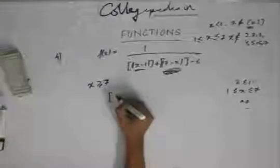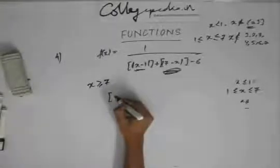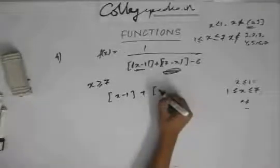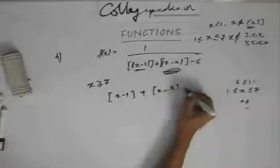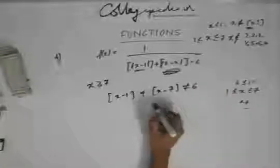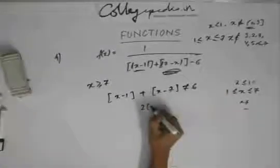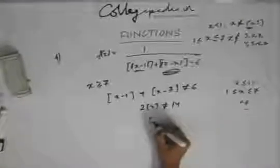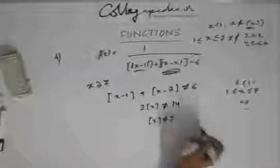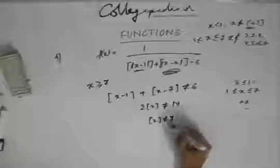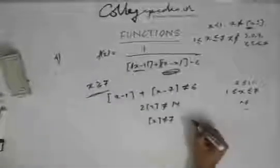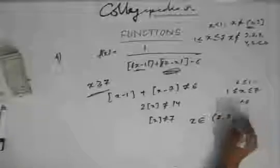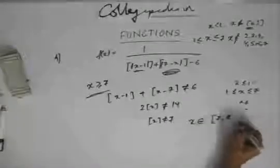So I will get x minus 1 plus x minus 7 not equal to 6, or 2 times floor of x should not equal 14, or floor of x should not equal 7. That means in this interval, x should not be in the range 7 to 8.